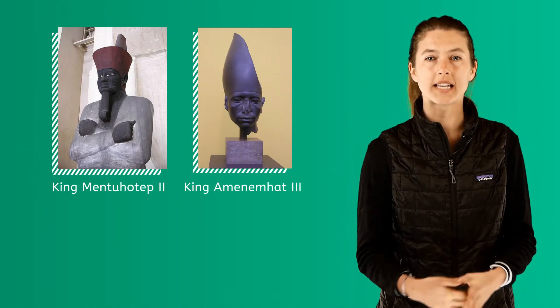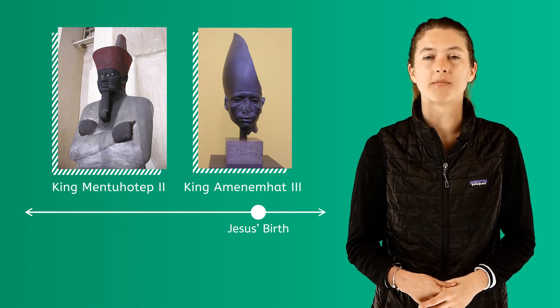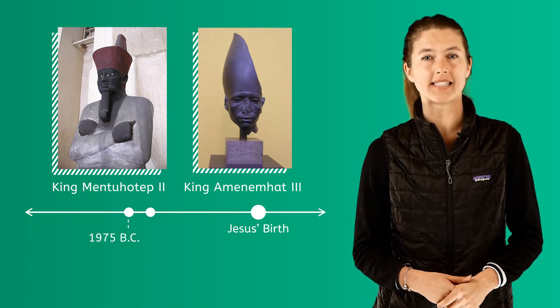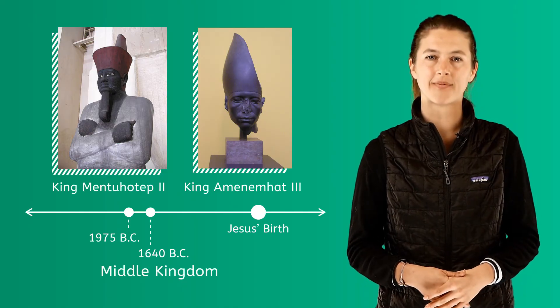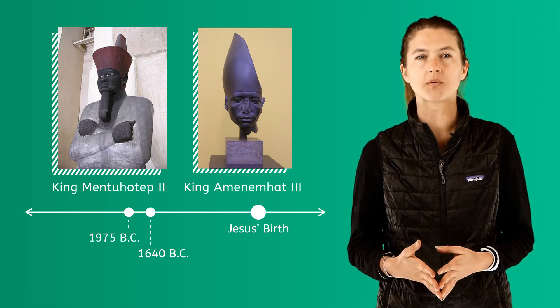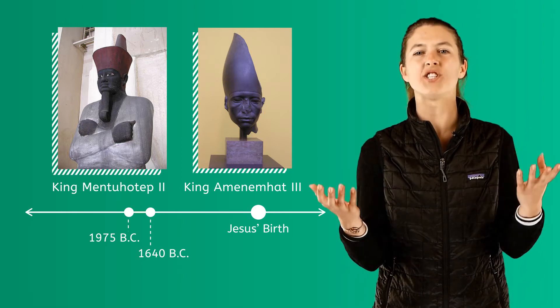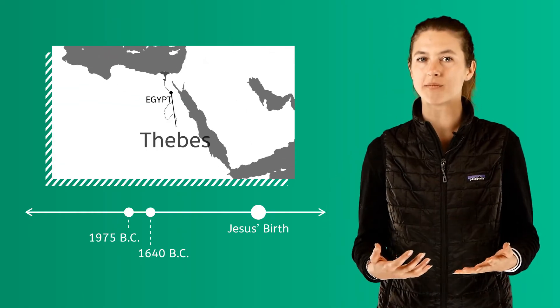Pharaohs Mentuhotep and Amenemhat ruled the time period from 1975 BC to 1640 BC, which is known as the Middle Kingdom. After the chaos of the previous time periods, these two pharaohs were able to once again unite Egypt. A new capital city was named, Thebes.